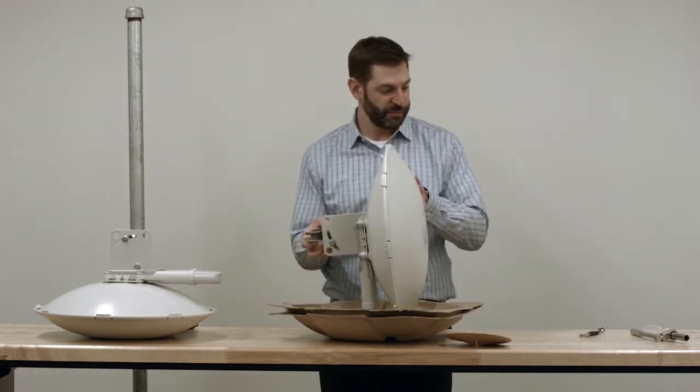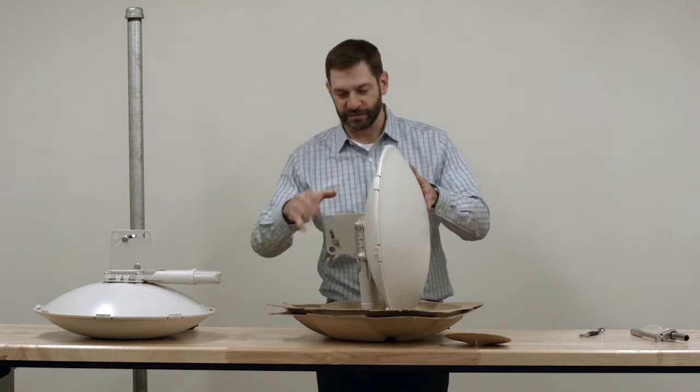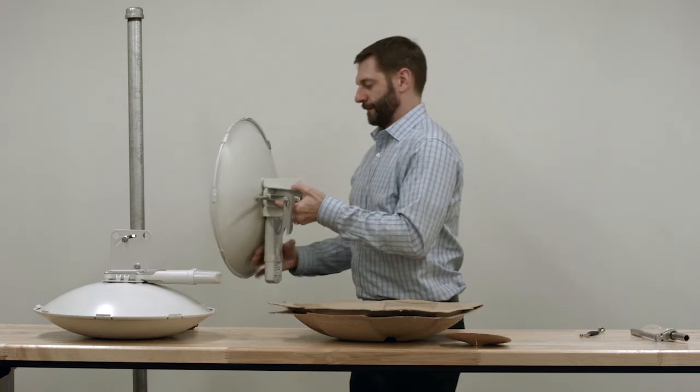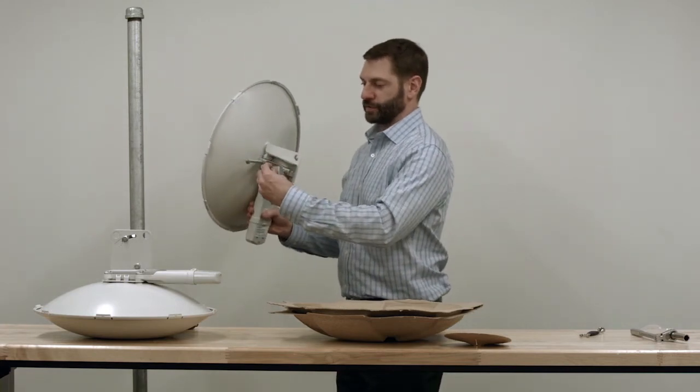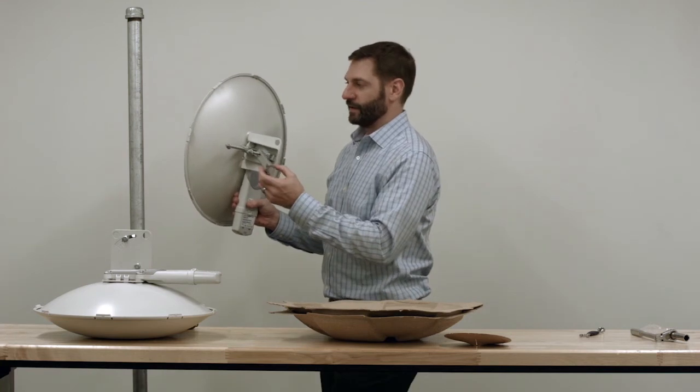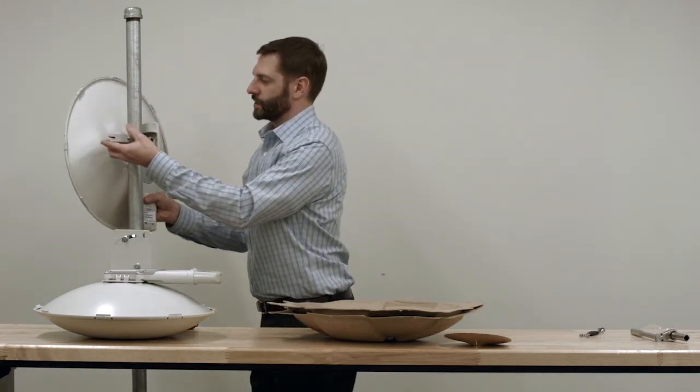It's all the way assembled aside from putting it on the pole. At this point, we're going to come around here to the pole. Once these bolts are loosened enough, again, this has a captivated end and a slot end.